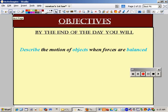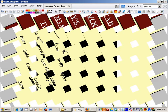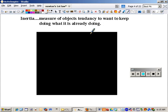Today we're going to describe the motion of objects when forces are balanced. And our vocab today is mostly going to be around this word here. This word is inertia. And it's when forces are balanced. So inertia is a measure of an object's tendency to keep doing what it's already doing.